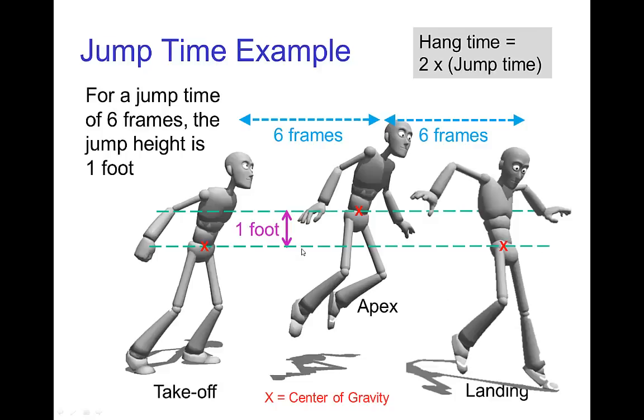So if we have a character that jumps and they jump to a height of 1 foot, then we know it takes 6 frames to fall from a height of 1 foot, and in fact it takes 6 frames to rise up to a height of 1 foot. So the time in the air is very easy to find from that table. The total time in the air would be 6 frames of jump time going up, and then 6 frames of jump time coming down. So the total hang time would be 12 frames for a jump that has a height of 1 foot.